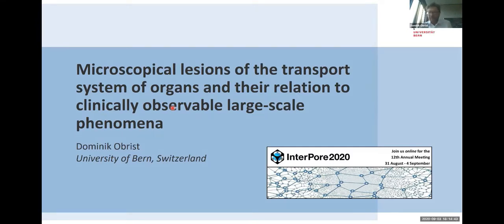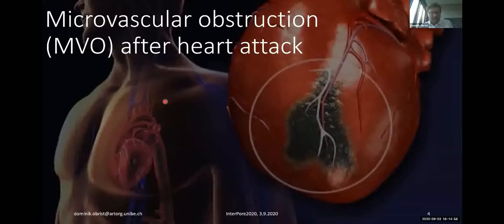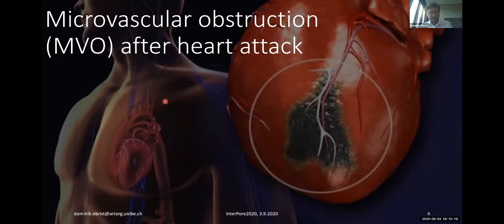Why is this important? I will show you five examples of such diseases which are connected to microscopical lesions. Take for instance the first example: the microvascular obstruction of the heart muscle. Microvascular obstruction is connected to heart attack — it may occur after heart attack. We all know heart attack is a relatively common condition; it affects over 800,000 people every year in the US alone. And cardiovascular diseases are the major cause of death in the industrialized world.